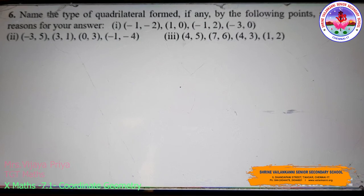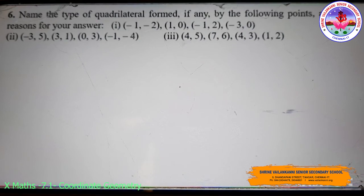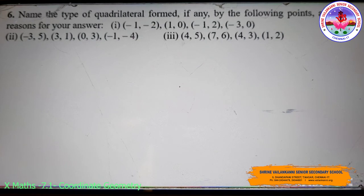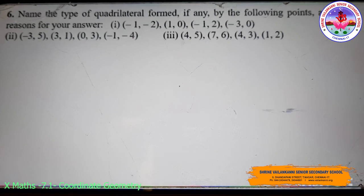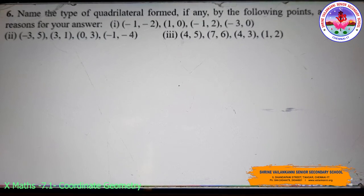We have given the first subdivision: points (-1, -2), (1, 0), (-1, 2), and (-3, 0). We want to find out what type of quadrilateral is formed by these points and we have to give the reason for the answer.